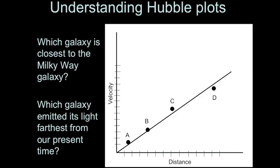Here is a Hubble plot with velocity versus distance and four different galaxies — A, B, C, and D — plotted on the line. The galaxy closest to the Milky Way is galaxy A, which has the smallest distance on the graph, and the farthest is galaxy D. Because the farther away a galaxy is, the further back in time its light was emitted, galaxy D emitted its light farthest from our present time. To think about time in a Hubble plot, look at the distance axis: greater distance means further back in time.